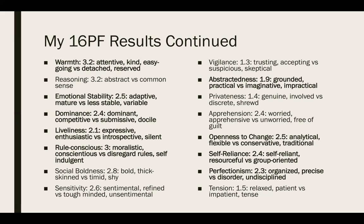Rule conscious I scored a 3 — I'm a rule follower, it just is what it is. Abstractedness I scored a 1.9 — I'm more practical and by-the-books. Openness to change I scored a 2.5, meaning I'm more analytical and flexible than traditional and conservative. Self-reliant — I'm a very independent person, I scored 2.4. Perfectionism I scored a 2.3 — I'm organized at school and a little more disorganized at home. I found these results very intriguing and I love that it's scored on a continuous scale, because it proves there's so much variability in personality and what makes a person them. That is what I found most interesting about Raymond Cattell.